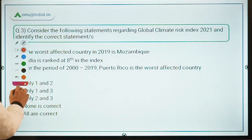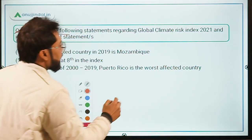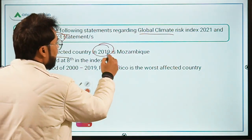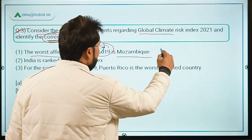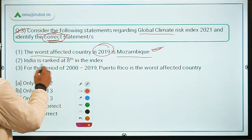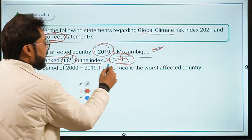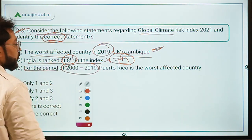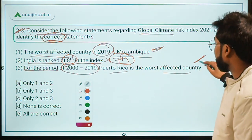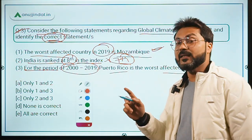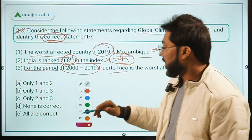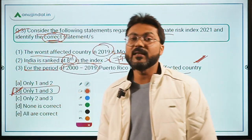Now for question three, evaluating the statements: Statement one — the worst affected country in 2019 is Mozambique — is absolutely correct. Statement two — India was ranked 8th in the index — is incorrect; India was ranked 7th. Statement three — for the period 2000 to 2019, Puerto Rico is the worst affected country — is absolutely correct. Since we need to identify correct statements, Option B (only statements one and three) is the correct answer.